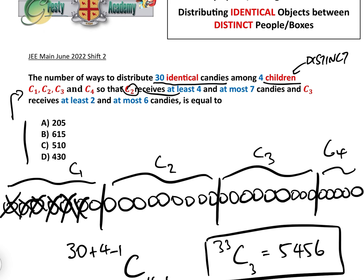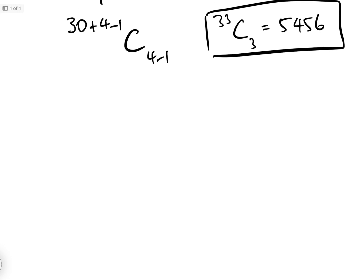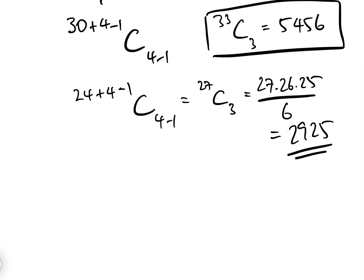Well that means that we have 24 identical candies left to be distributed between all of them. So if we ignore the upper constraint for now, then basically there will be 24 plus 4 minus 1, C4 minus 1, that's our formula, which equals 27C3, which is 27 times 26 times 25 over 6, which equals 2925 possible ways that we can distribute these candies, given that C2 gets at least 4 and C3 gets at least 2.